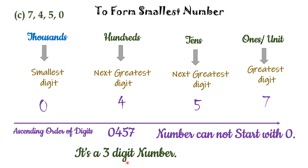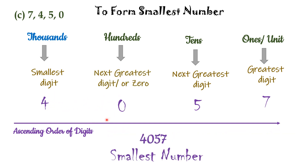Hence, हमें 0 के अलावा जो भी digit 0 से बड़ी है, उसे left side place करना होगा. इस case में वो digit 4 है. And then 0 उसकी place पर आएगा — 4 की जगह 0 आ जाएगा. तो यहाँ पर हमें number मिलेगा 4057, जो 7, 4, 5, 0 digits यूज़ करने पर सबसे smallest number होगा. अगर आपको leading zeros का concept detail में समझना है, तो आप हमारा previous video on the topic greatest and smallest number जरूर देखें.